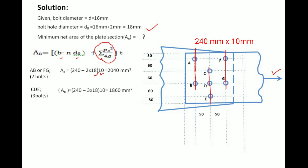The next critical section is C–D–E, which has three bolt holes. The net area formula gives: b = 240, n = 3, dh = 18 mm, t = 10 mm, and staggered term = 0. This gives us the net area for the C–D–E critical section.